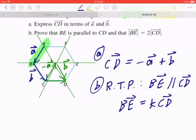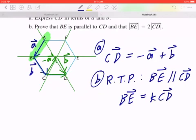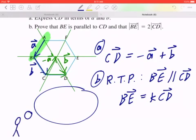And by inspection, just by looking at this, you can tell that BE, so let's write this as a thought first. We haven't written down why this is true yet. But you can imagine that BE equals to two CD.